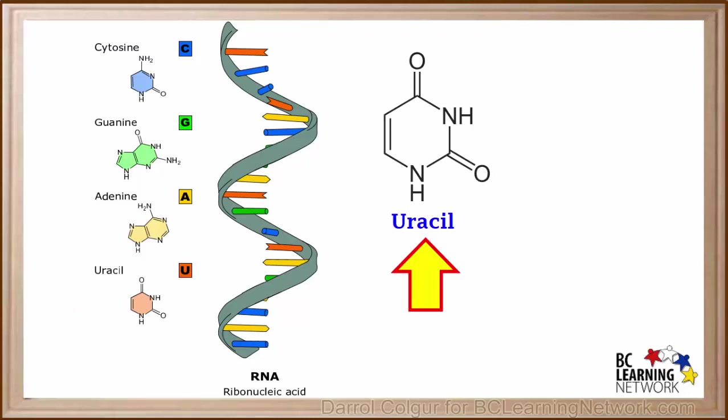This diagram shows the structure of uracil. In uracil, nothing is shown on this carbon atom. When nothing is shown on a carbon atom in this type of model, it means there is a hydrogen atom attached here.